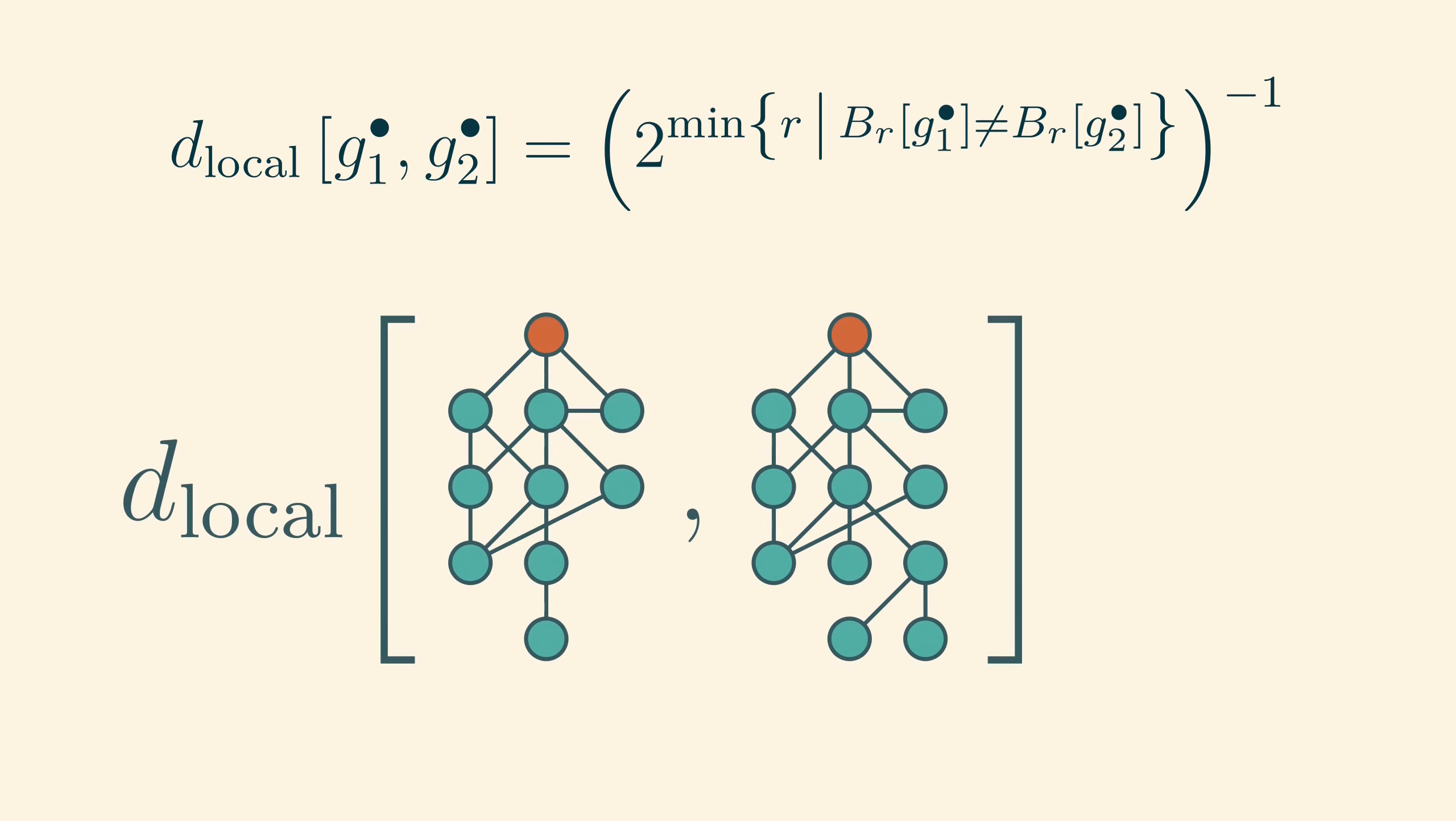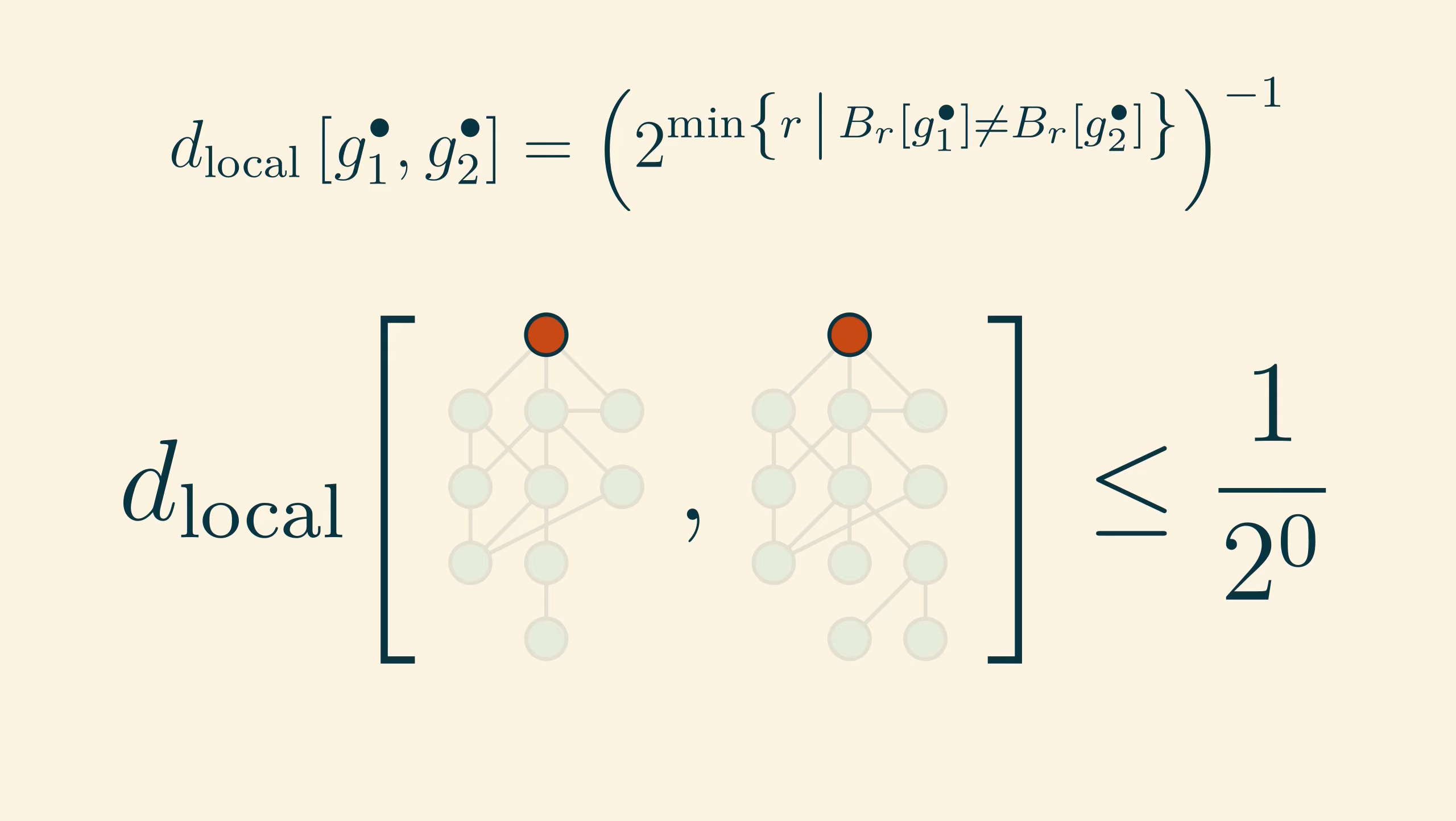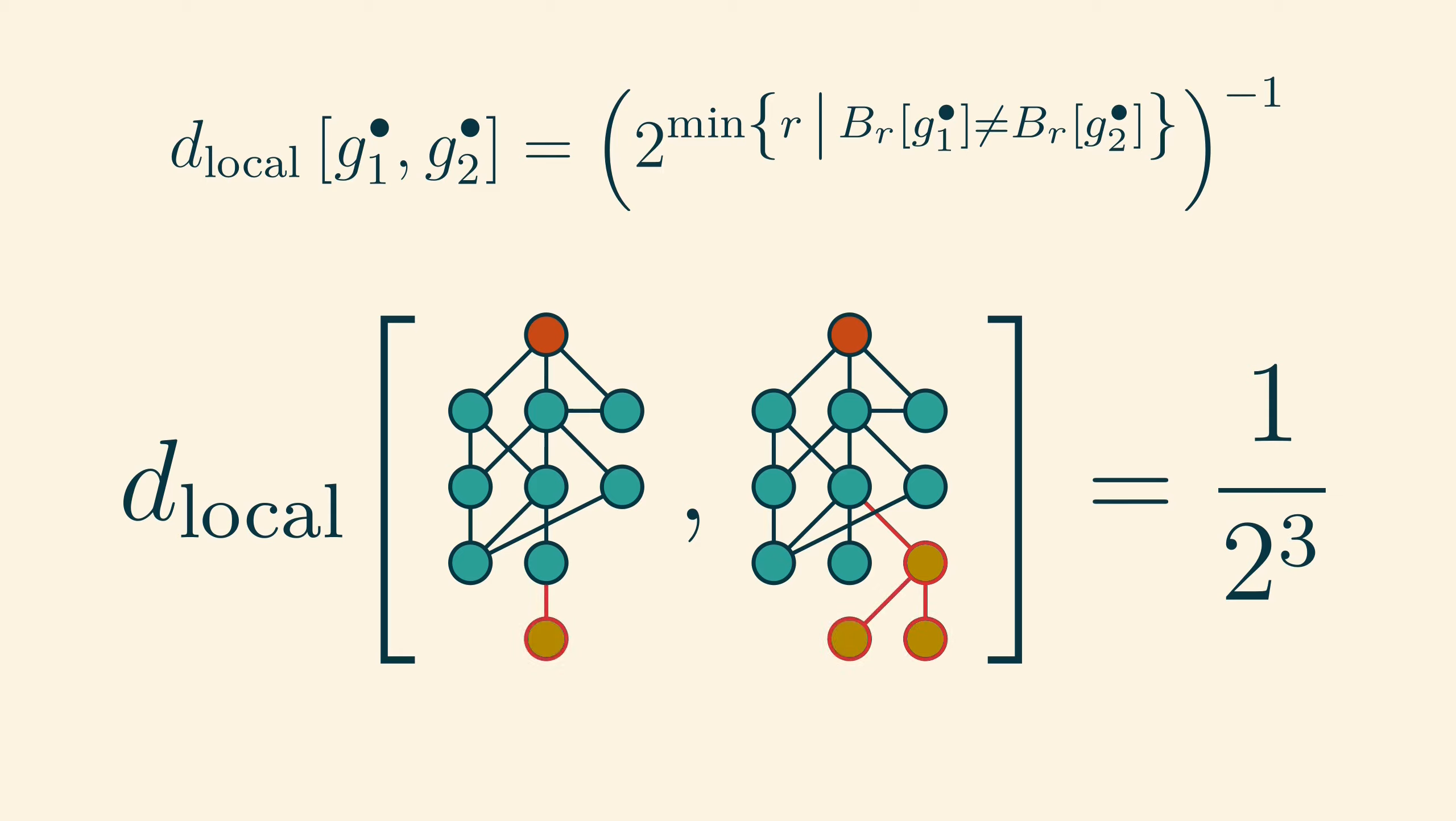It looks a bit complicated, so let's try an example computation. What is the local distance between these two graphs? We've drawn them so that the root is at the top and the R balls are easy to see. Both 0 balls are just the root, as always, and so they are equal. The 1 balls are also equal, as are the 2 balls, but, oh, now the 3 balls are not isomorphic to each other. Since this is the first value of R where this happens, the local distance between these two graphs is 1 over 2 cubed. Now, the 4 balls are also not isomorphic, but since 4 is larger than 3, this does not change our computed value of the local distance.